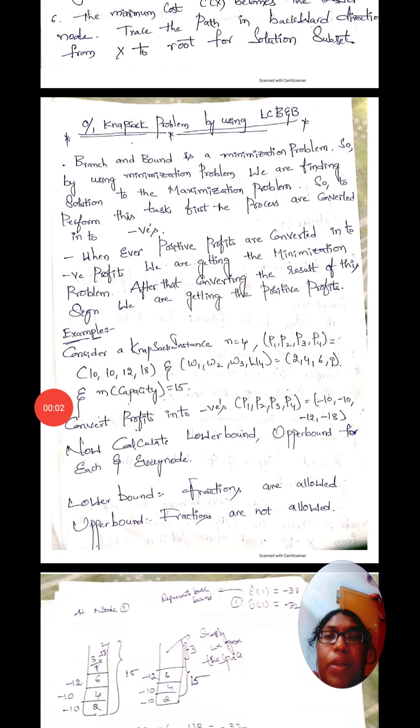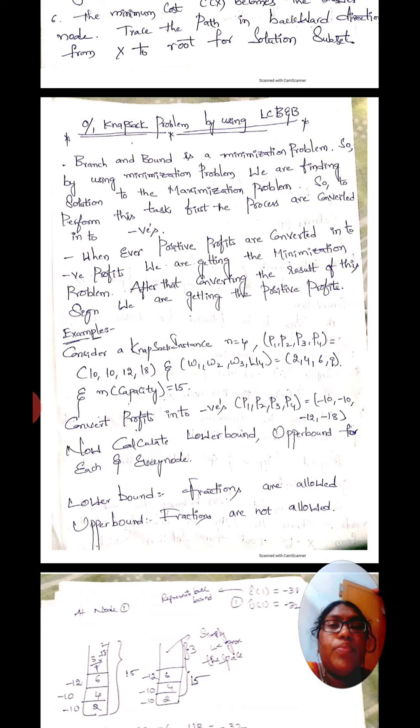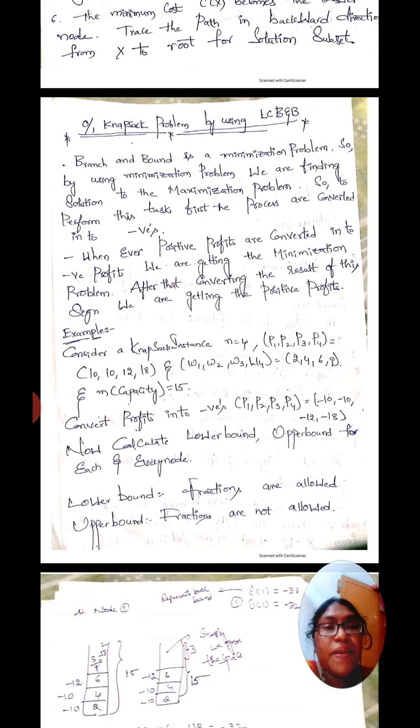We will now solve the 0/1 knapsack problem using least cost branch and bound. Branch and bound is a minimization problem. By using a minimization problem, we are finding a solution to the maximization problem.